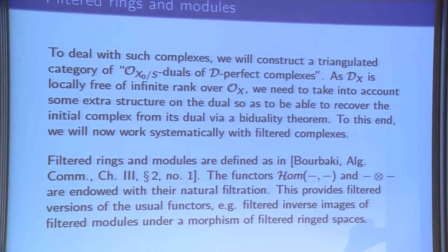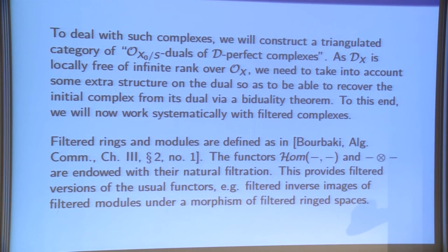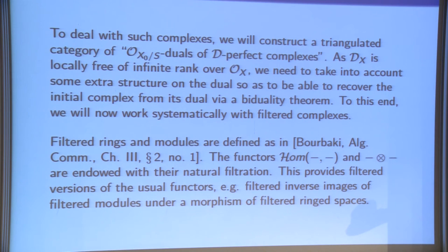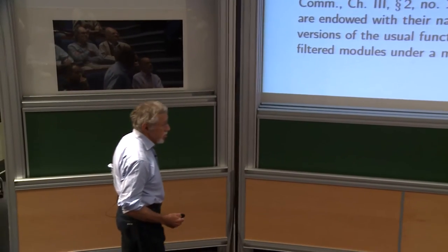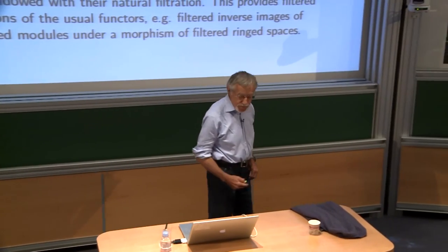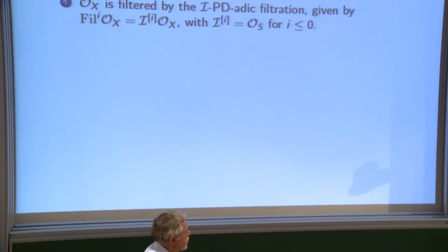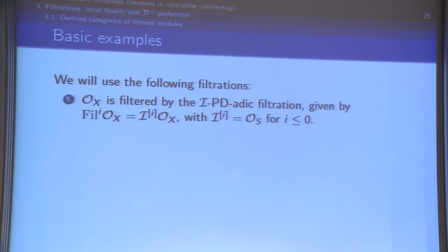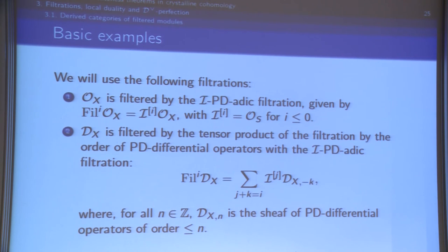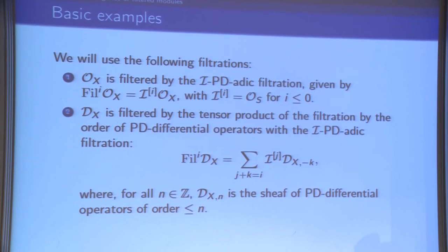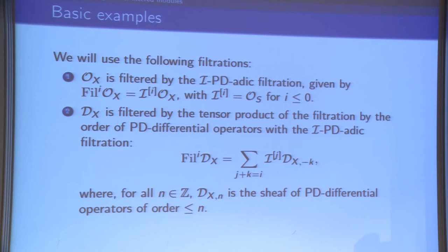Filtered rings and modules are defined as in Bourbaki: no assumption of exhaustivity, separatedness, or any additional property on the filtration — just an abstract filtration. This gives filtered versions of the usual functors Hom and tensor product, and from these we get filtered versions of inverse images and so on. For O_X I use the filtration given by the ideal defining S_0 into S — the I_P-adic filtration, which is discrete. For the sheaf of differential operators, it has a natural filtration by order of differential operators, but I use instead the tensor product with the I-adic filtration from the base, since I am working mod I.